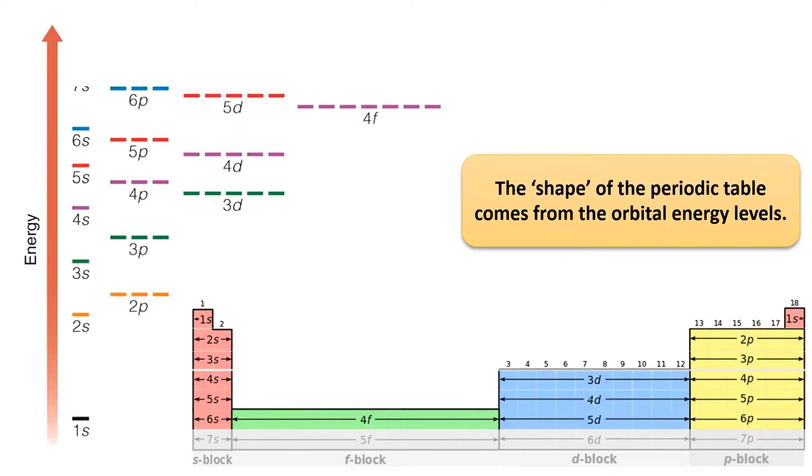Next, we filled the 6S, the 4F, the 5D, and the 6P subshells. The introduction of the F subshell adds four extra elements to our table, making the table 32 elements wide at its widest point.